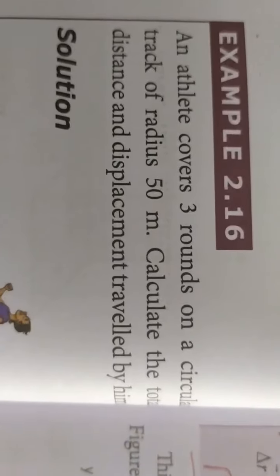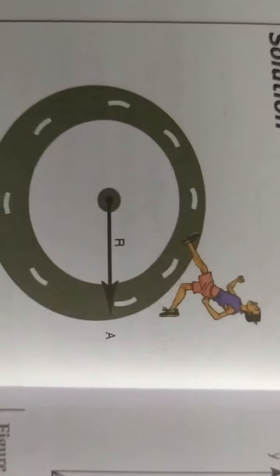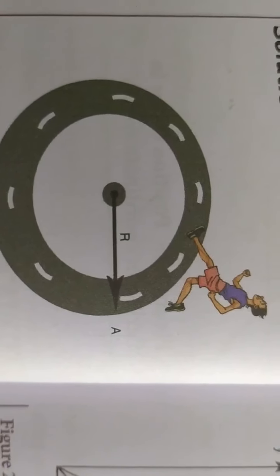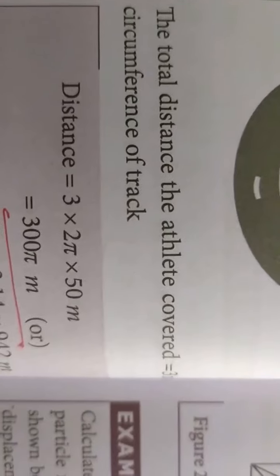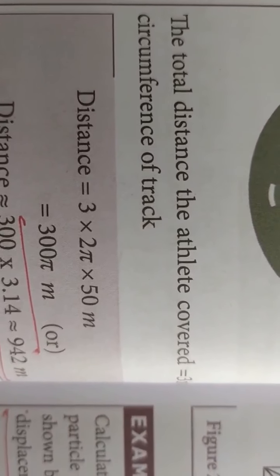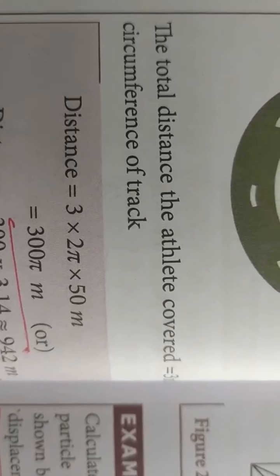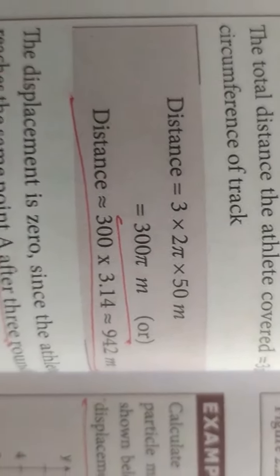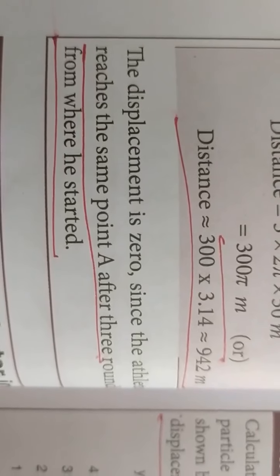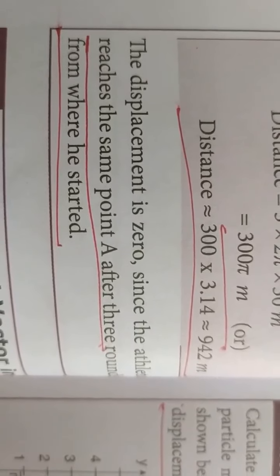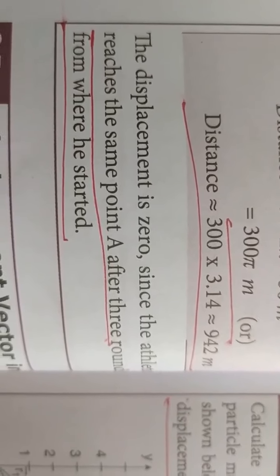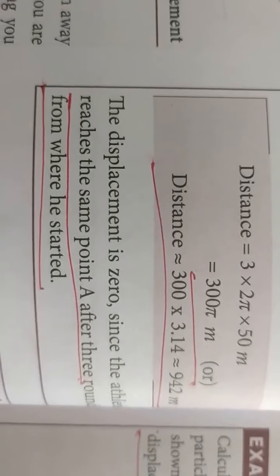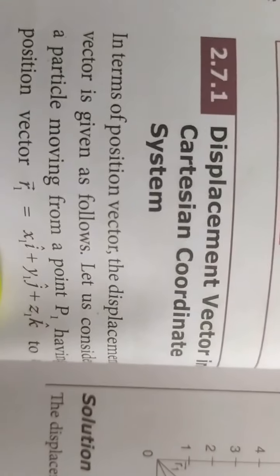Similarly, an athlete covering 3 rounds on a circular path: the distance is 3 × 2πr, which works out to 942 meters. However, the displacement is 0, because the athlete returns to the same starting point after 3 rounds. These are the key differences between distance and displacement.